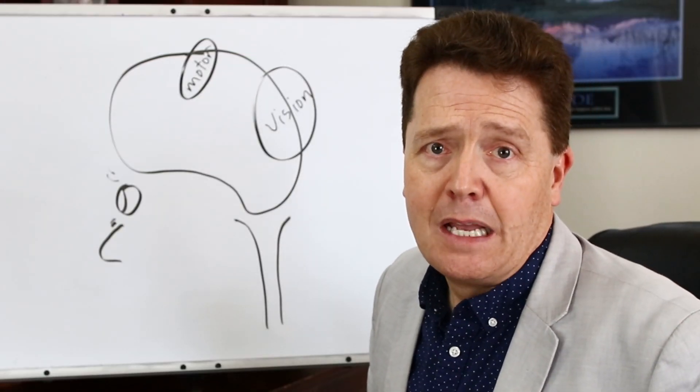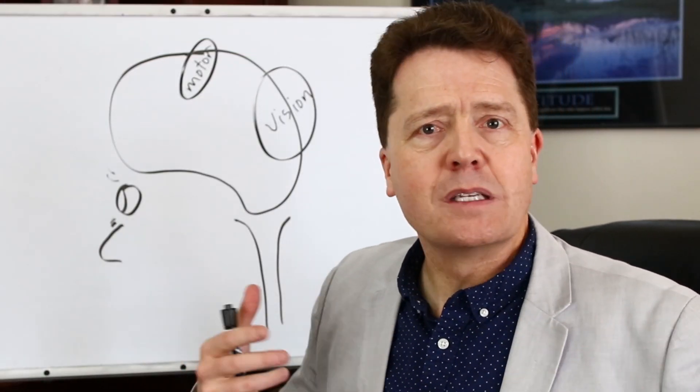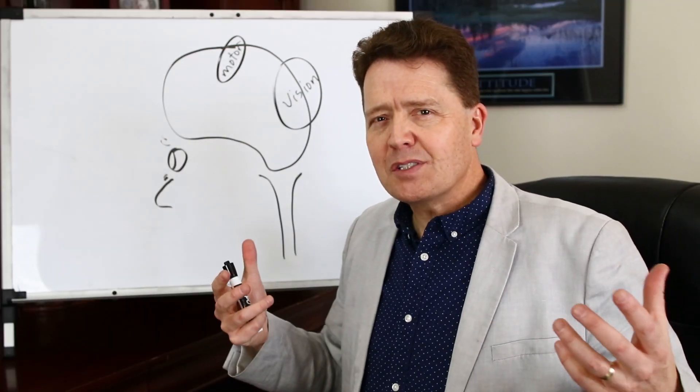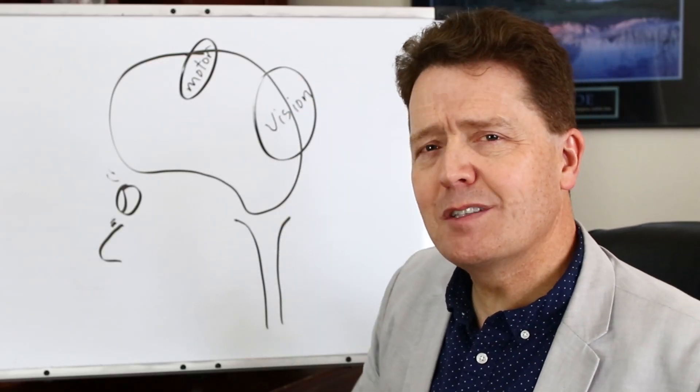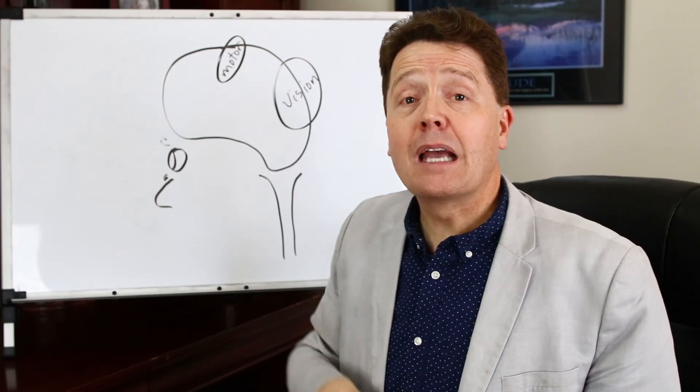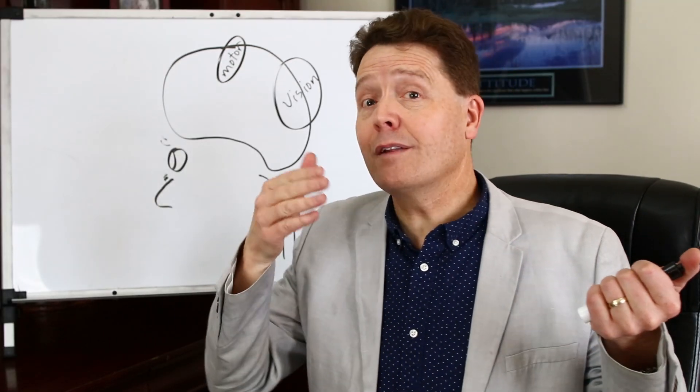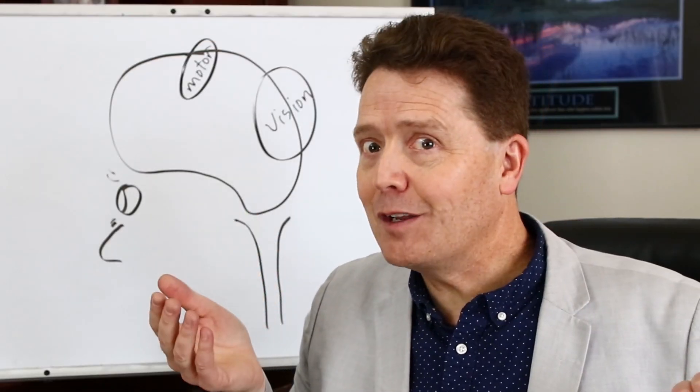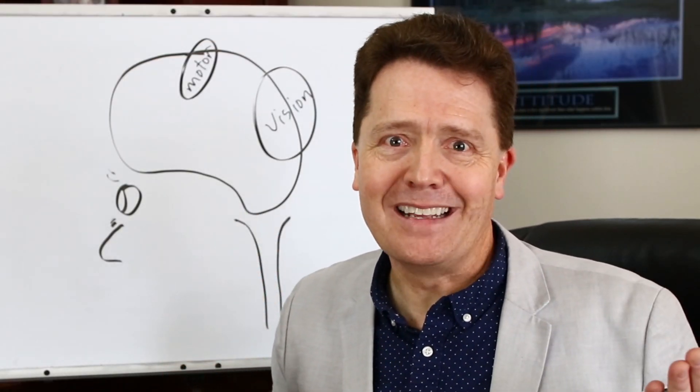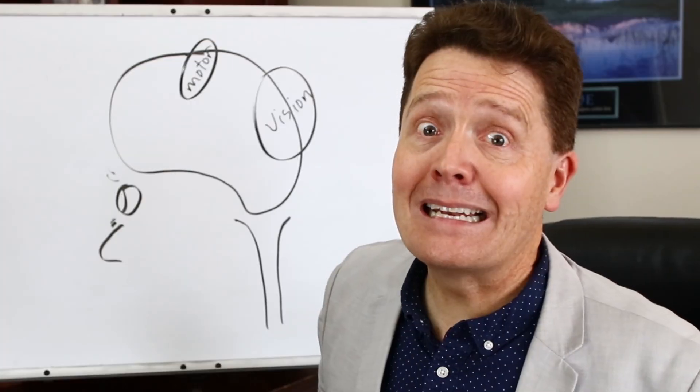There's another part right up here on top that controls motor function, meaning your muscles. How you move your arms and legs. Both big muscles and little fine ones controlled right up there on top. It's about the size of your thumb. You got one on the right side of your brain and one on the left side of your brain. And the left side of your brain controls the right side of your body and vice versa. Why is it that way? I don't know. Didn't design your brain but that's how it is.